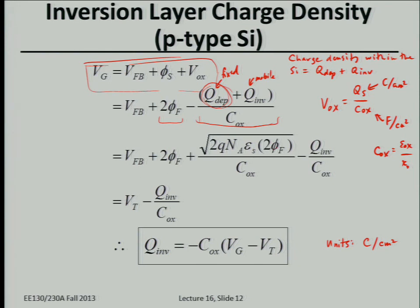Since the depletion charge doesn't increase much beyond threshold, we can write an equation: it's the same depletion charge at threshold, with 2φF band bending. This is the threshold voltage. As you increase the gate voltage beyond threshold, you're inducing more mobile electron charge at the interface. That extra electron charge causes an extra voltage drop across the oxide — so above threshold, all you're doing is increasing the voltage drop across the oxide, not across the silicon.